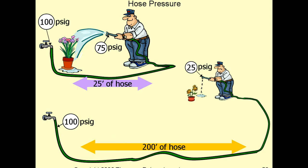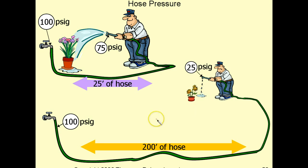Here's a great example of how a cap tube works — it's just like your garden hose. If you have 100 PSI of pressure coming out of your spigot and 25 feet of hose, you'll have 75 PSI of water coming out the end of the hose because the friction of the hose drops the pressure. Now take that same spigot at 100 PSI and put on 200 feet of hose — you hardly have any water coming out. This is the same principle as a cap tube.